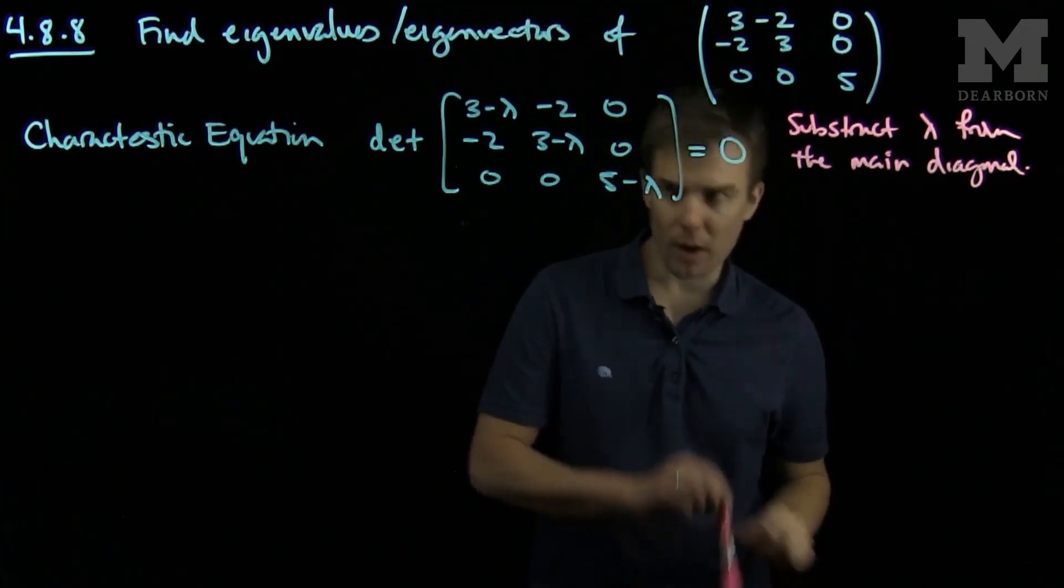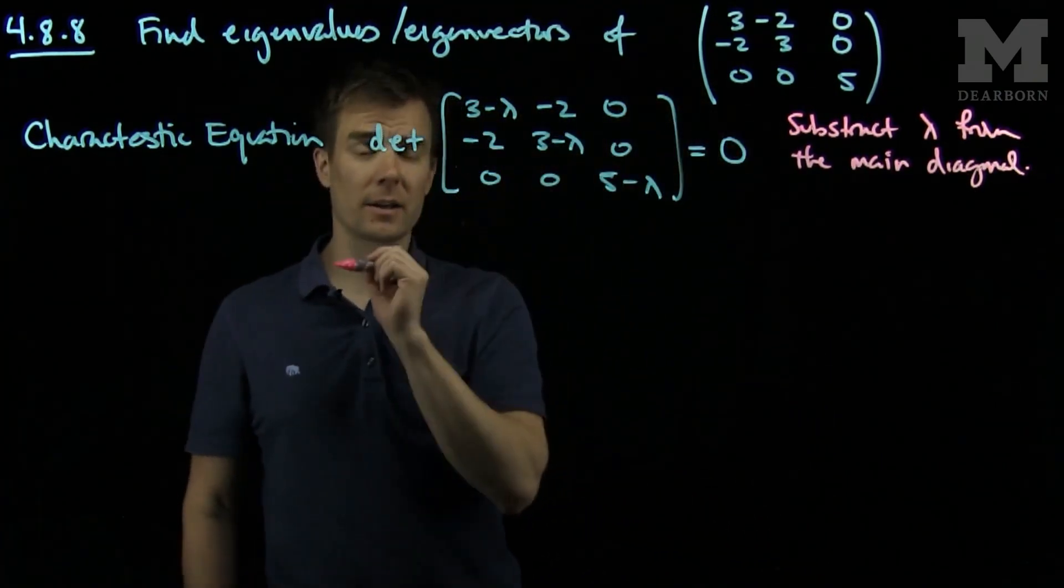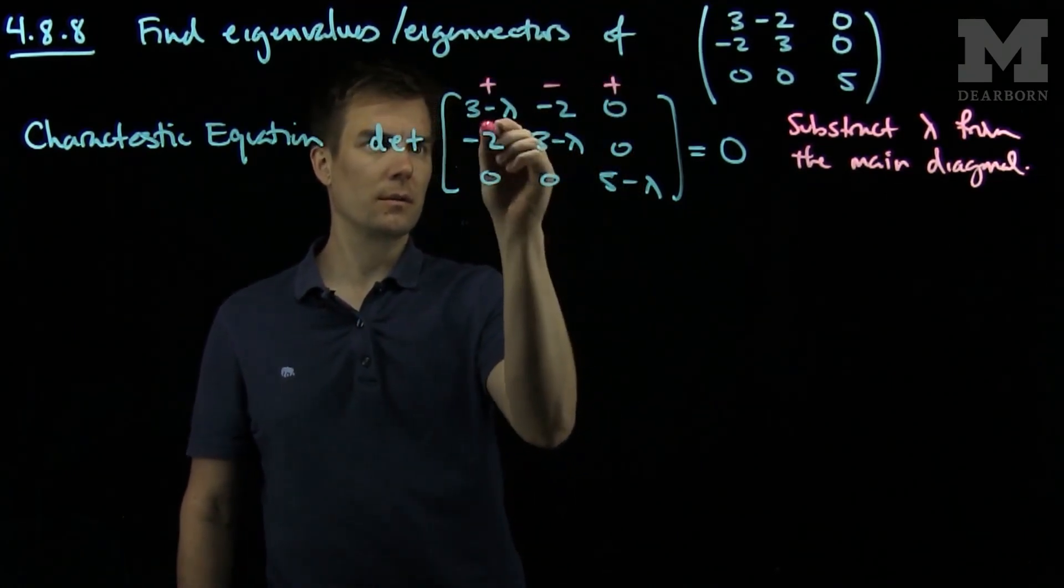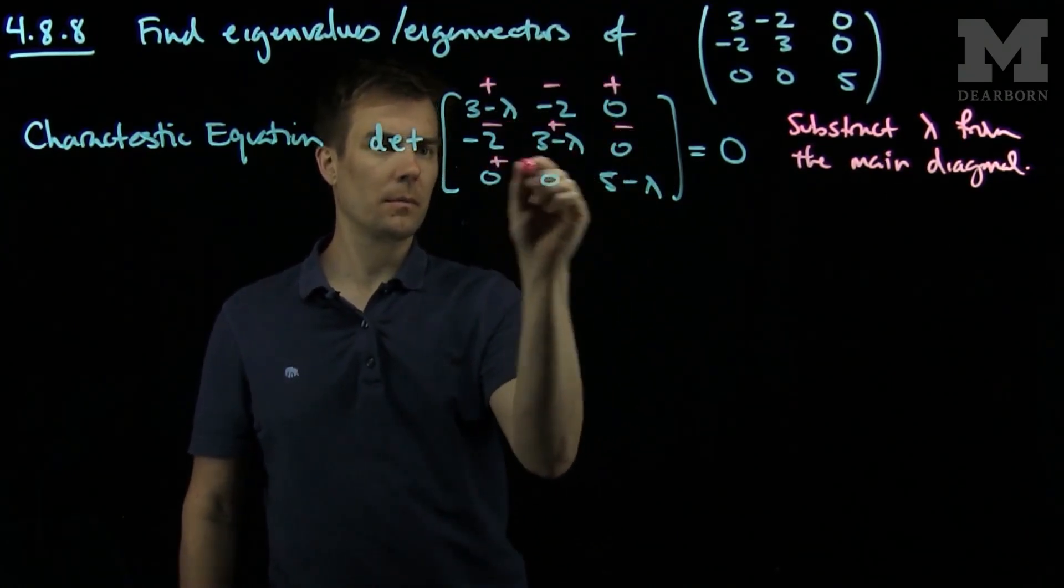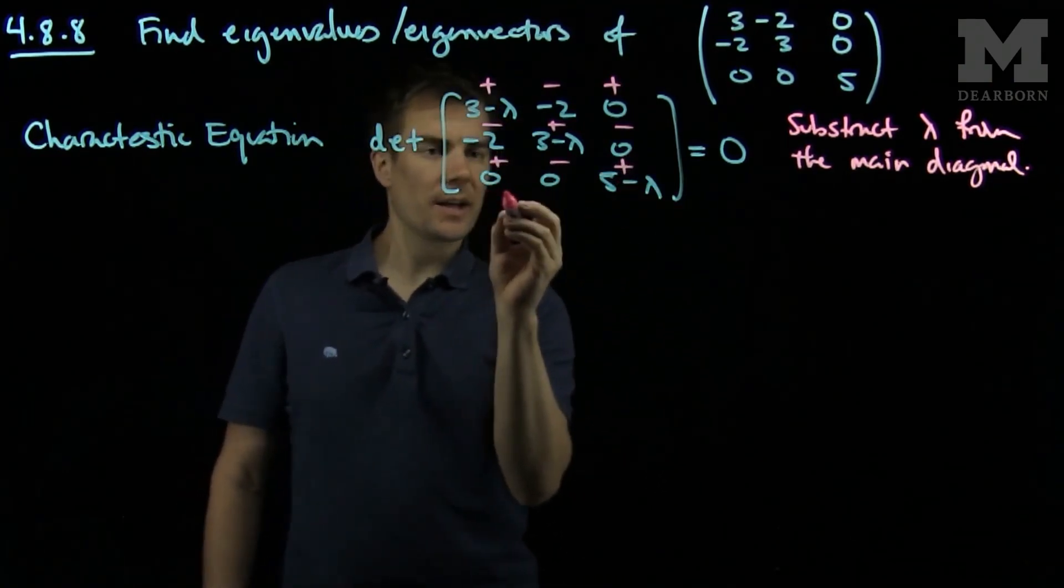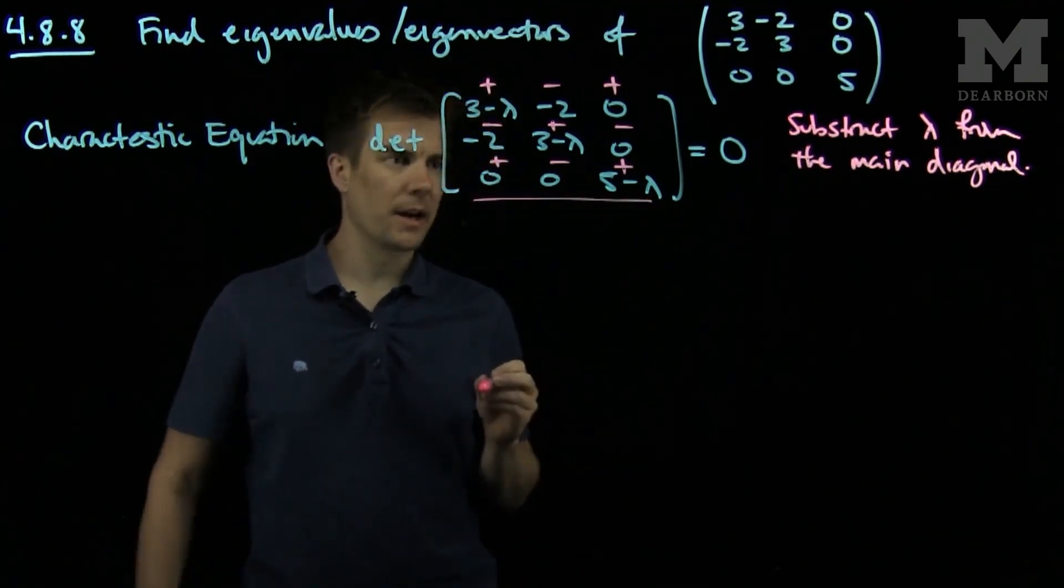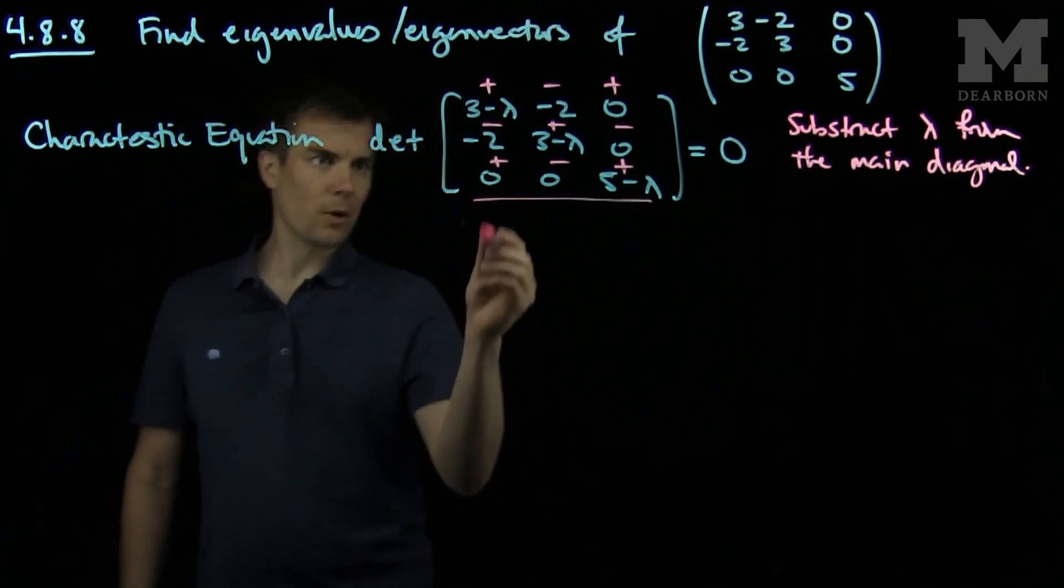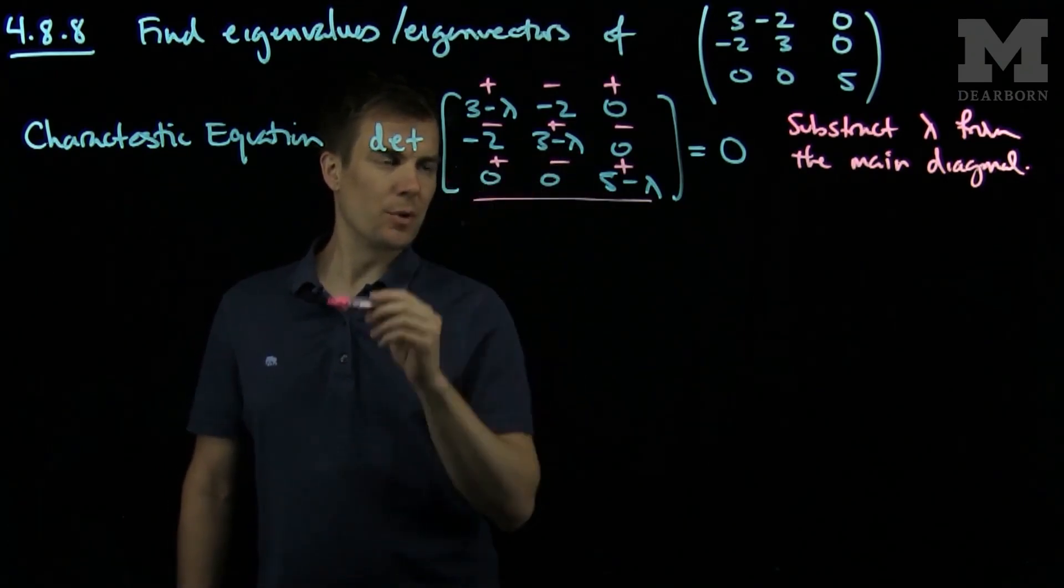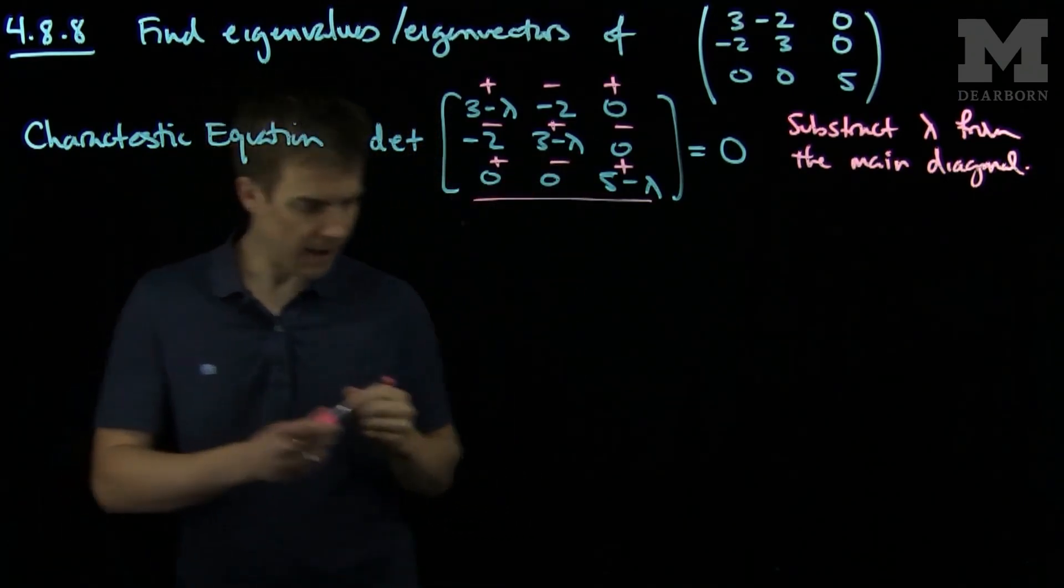And we recall that to compute the determinant, I can expand along any row or column. So I have to make my sign chart. And we see that the last row has a lot of zeros, so we'll expand along the last row.